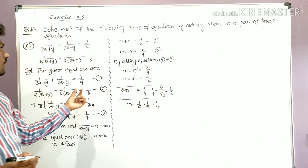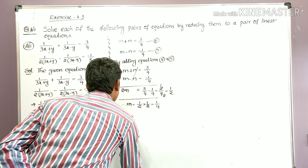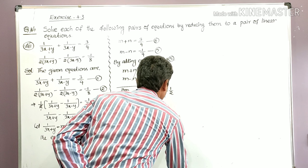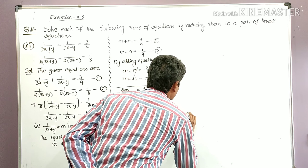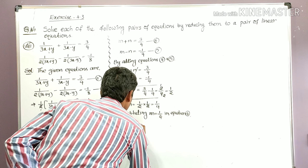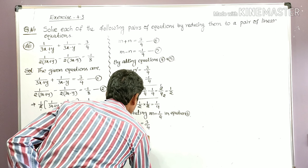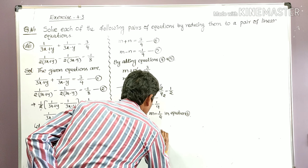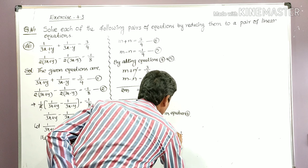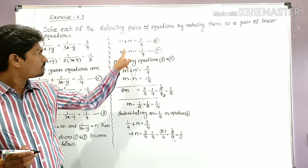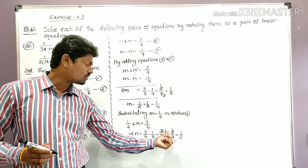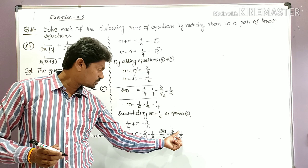Substituting m = 1/4 in equation 4: equation 4 is m + n = 3/4. That gives 1/4 + n = 3/4. Therefore n = 3/4 − 1/4 = (3 − 1)/4 = 2/4. Since 2 ones and 2 twos cancel, n = 1/2.